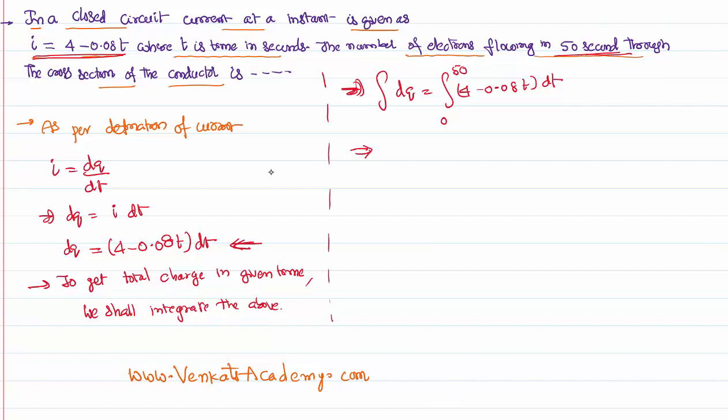We know integral of differentiation of q is q. Integral of 4 dt is 4t, which is varying from 0 to 50. Minus 0.08 integral of t is t² by 2, which is varying again from 0 to 50.